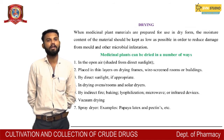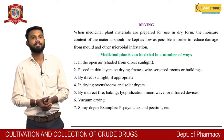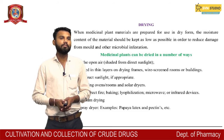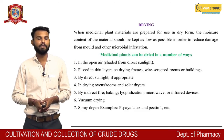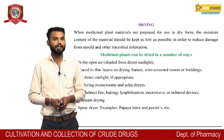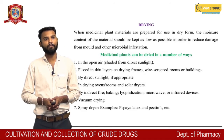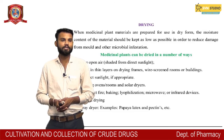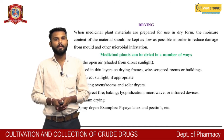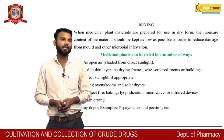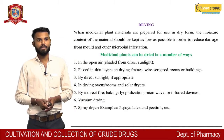Drying: When medicinal plant materials are prepared for use, the moisture content should be kept as low as possible to reduce damage from mold and other microbial infection. Medicinal plants can be dried in a number of ways: in the open air, placed in thin layers on drying frames via screened rooms and buildings, or via direct sunlight if appropriate; in open rooms and solar dryers; by indirect fire, banking, lyophilization, microwave, or infrared devices. Other methods include vacuum drying and spray drying, e.g., papaya latex and pectin.